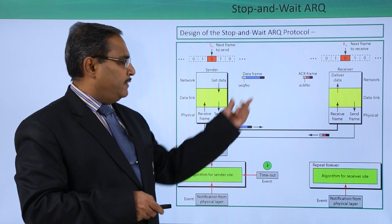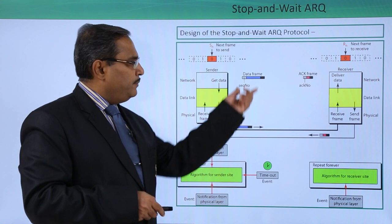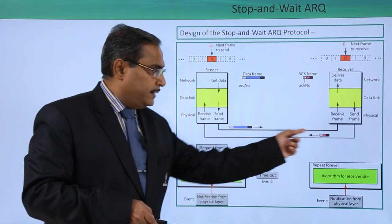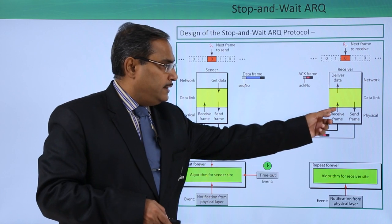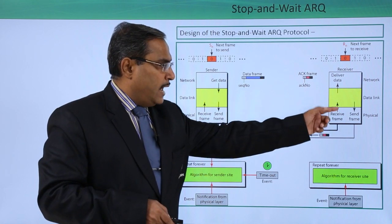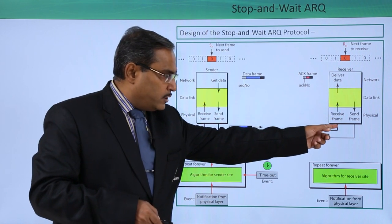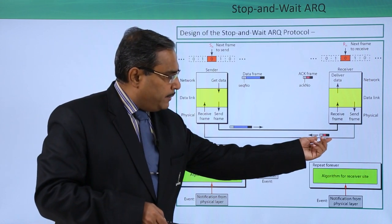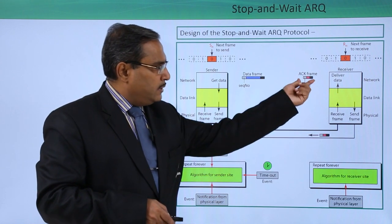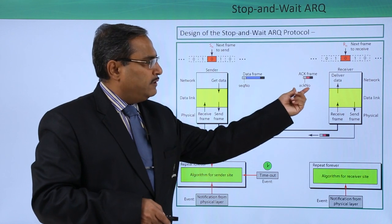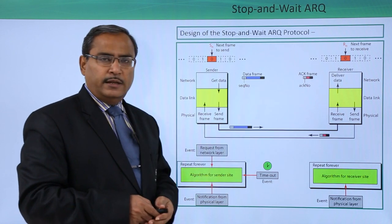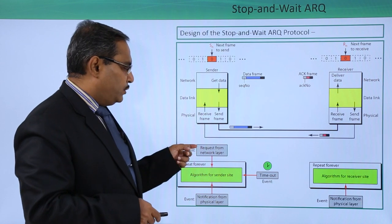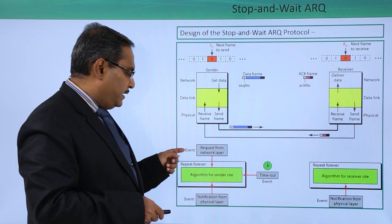This is the data frame, and here we have the sequence number. The frame is sent, the receiver receives it, and then one acknowledgement comes back from the data link layer. This is the acknowledgement frame, which will have the acknowledgement number as its first field. A request from the network layer constitutes one event.